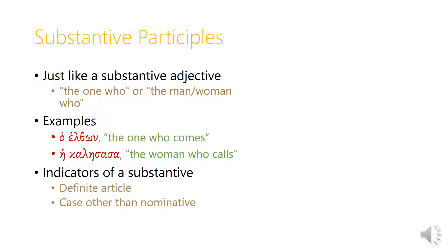How can we tell we're dealing with a substantive participle? The basic indicator is a definite article in front — a definite article in front of the participle form is usually a fairly sure indication that you've got a substantive. Another indicator, even without the article, is if the participle is in a case other than the nominative, because usually it's only in substantive participles that we get the other cases. That means the large majority of participles are nominative in form, some genitive as well, but the dative, accusative, and certainly the vocative are quite rare.